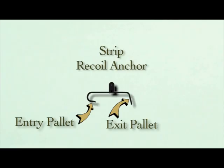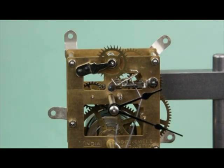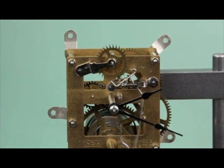Next, there are only two working surfaces or pallets that contact the escape wheel teeth, one on the entry side and one on the exit side of the anchor. Notice that the pallet surfaces are flat. Finally, the escape wheel teeth point away from the direction of rotation.